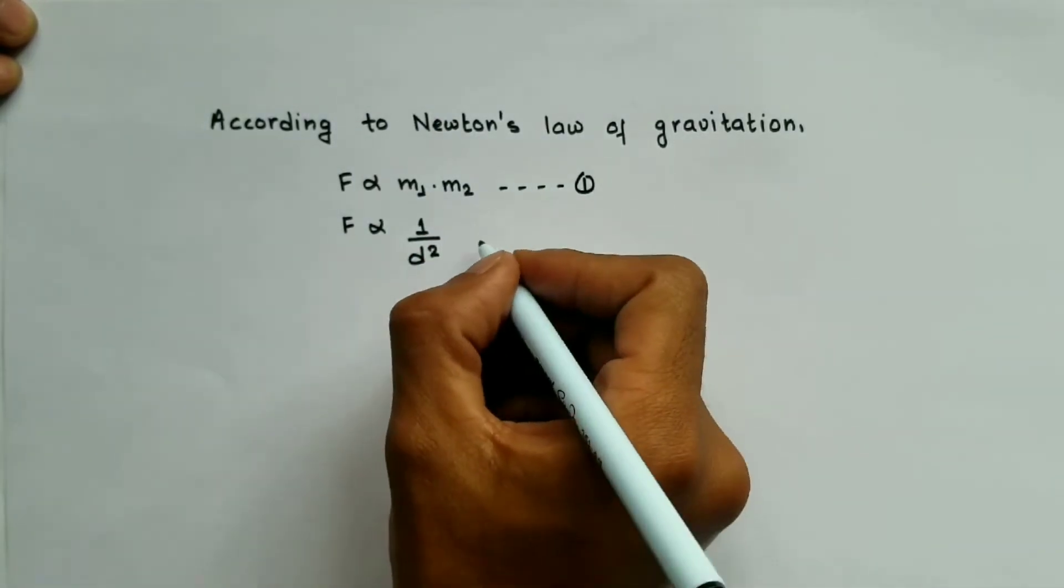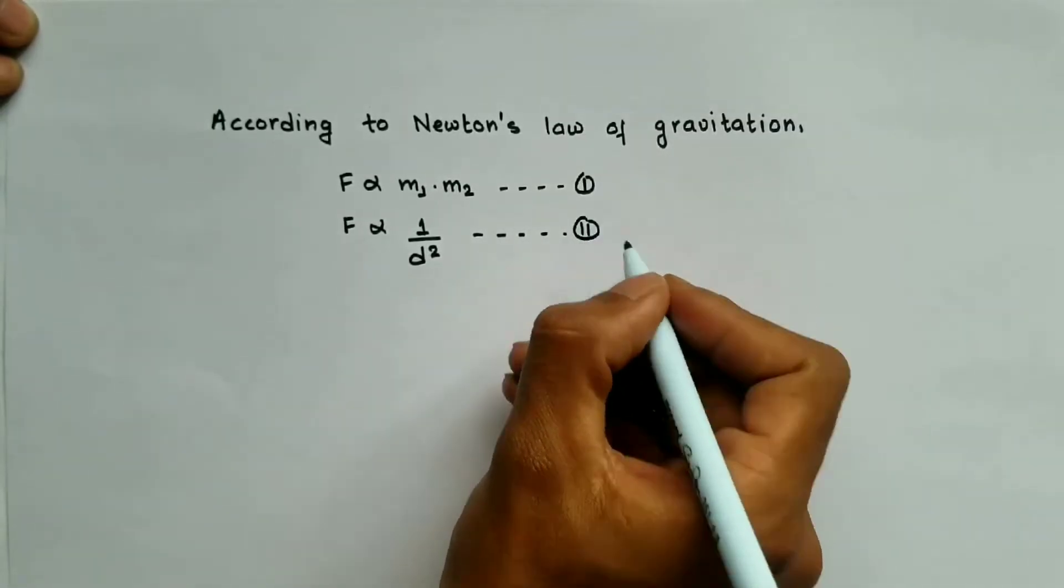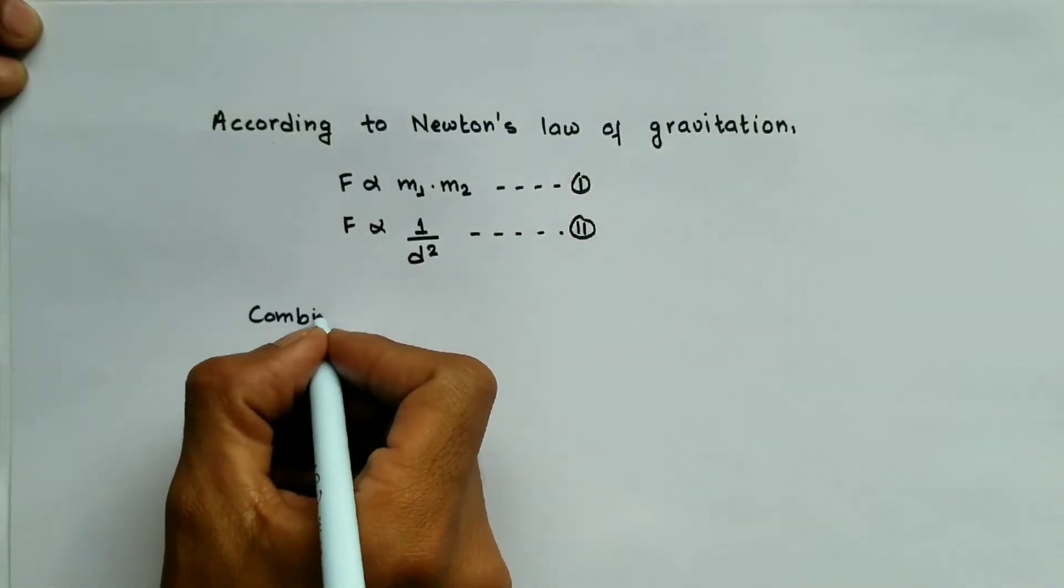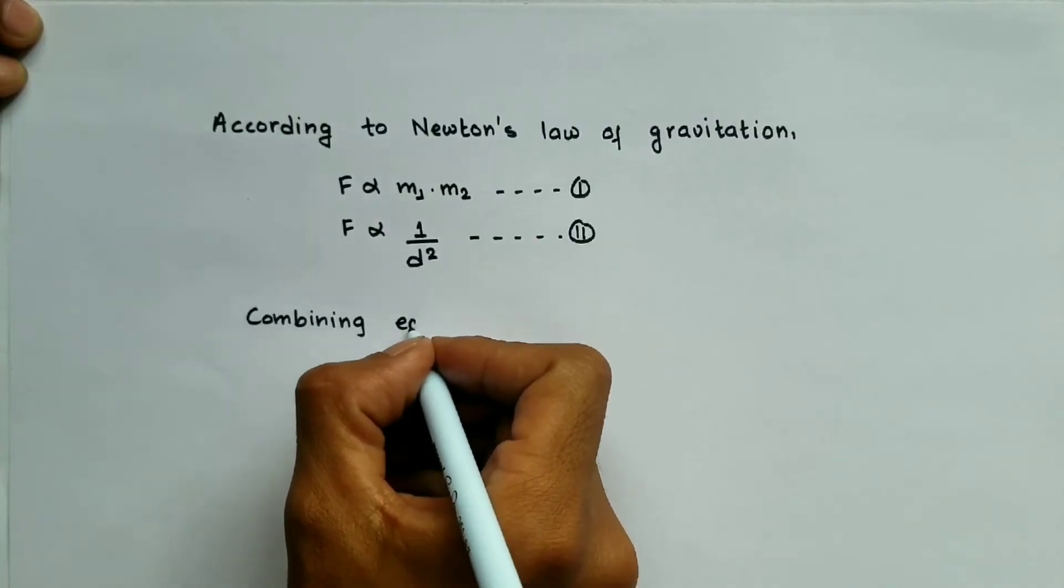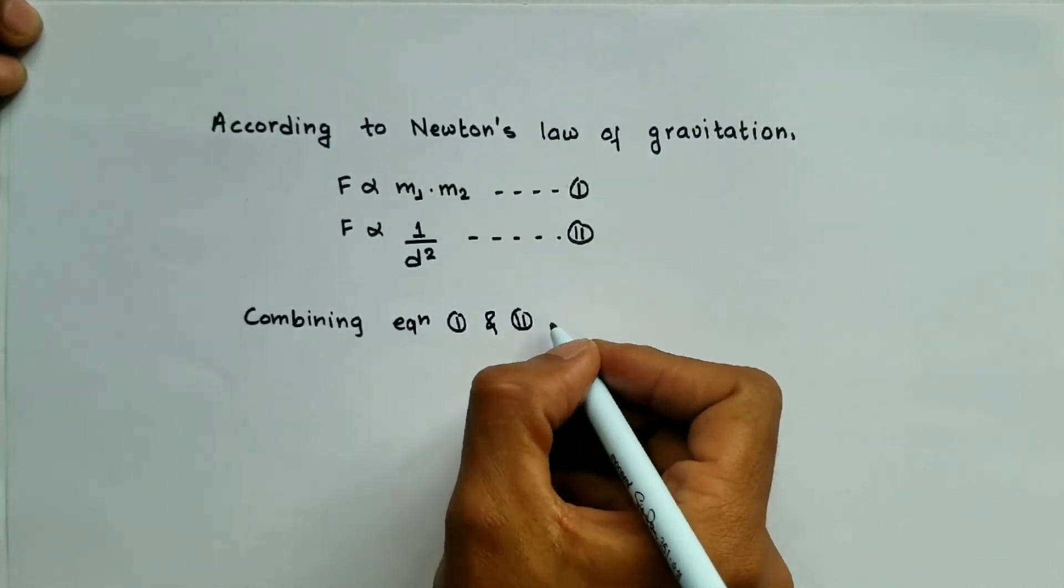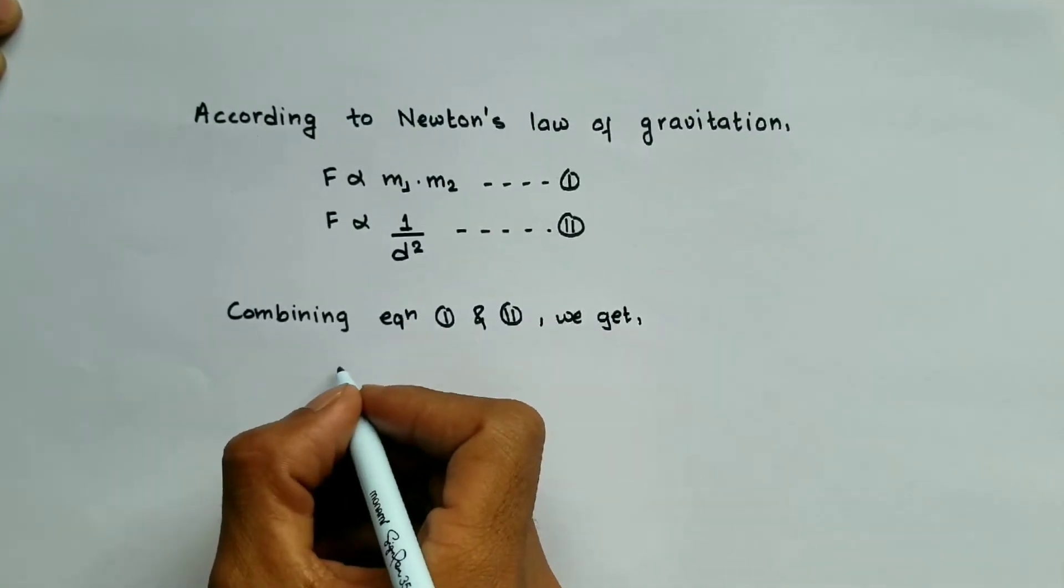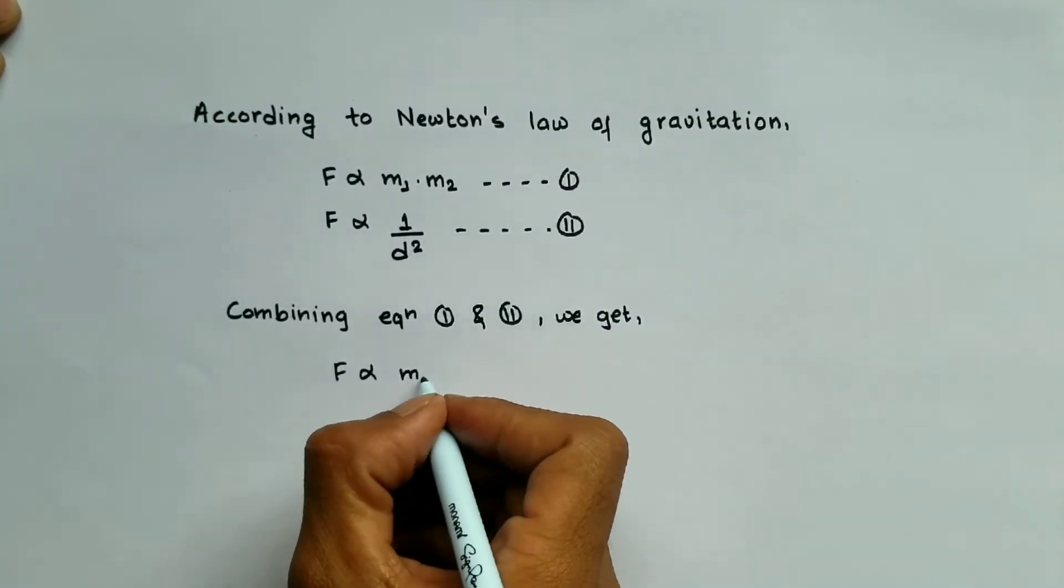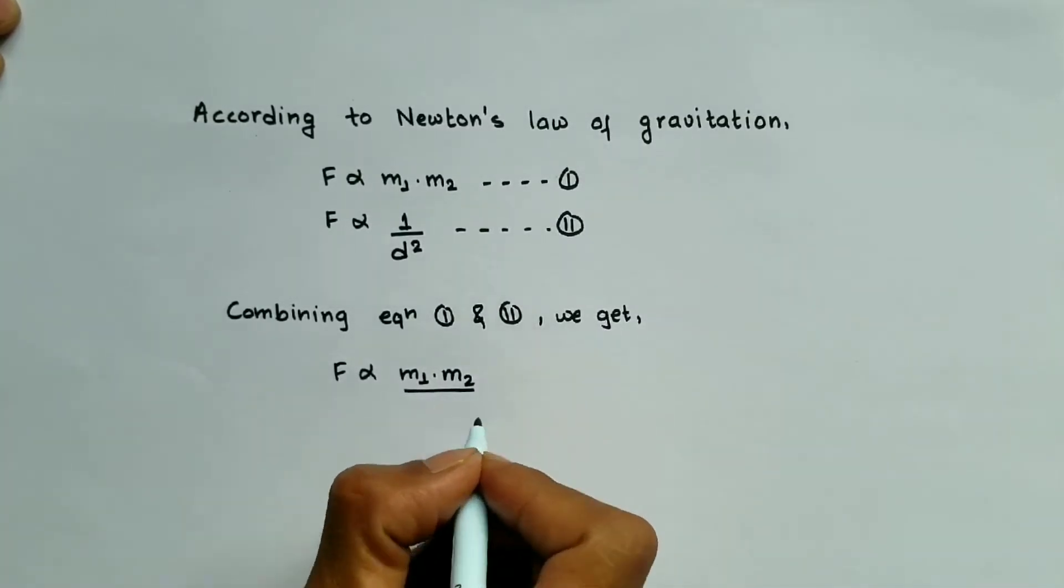We are going to assume these equations as equation 1 and 2. After combining these two equations we get F is proportional to m1 times m2 by d square.